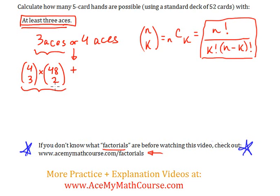So these many ways will represent the five card hands that are possible with exactly three aces. But what about the four aces? Well, from the four aces then you choose four of them. So that's four combination four times. Now from the 48 non-aces, you're only choosing one card.